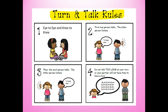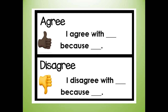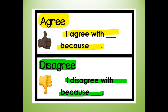Let's go over our turn and talk rules. If you have a partner at home, number one, make sure you're eye to eye and knee to knee, facing each other. First one person talks, the other person listens. Then the next person talks, the other person listens. Do not talk too long on your turn or your partner will not have time to have a turn. When speaking with your partner or to me virtually, you can either agree and say 'I agree with you because' and tell me why, or say 'I disagree with you because' and say why.